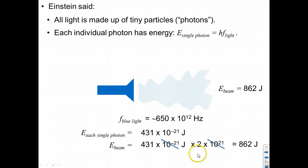So what we see is that this here, 2 times 10 to the 21, is the number of photons in this beam. So this particular beam, with this particular energy, and this particular frequency, that beam has 2 times 10 to the 21 photons of light.